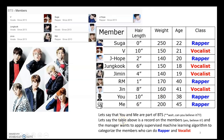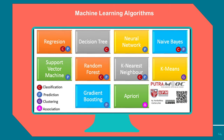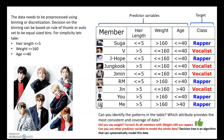The task is to apply a supervised machine learning algorithm to categorize the members based on what they can do for the group — as rapper or vocalist. The benefit is that when there is a new member with characteristics such as hair length equals 8, weight equals 190, and age equals 18, we can determine whether this person should be assigned as rapper or vocalist.